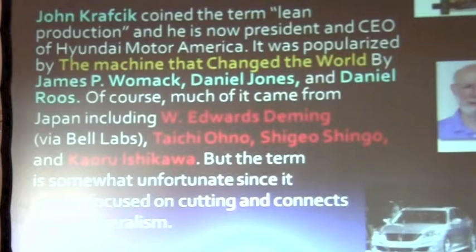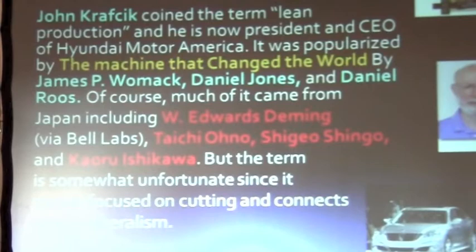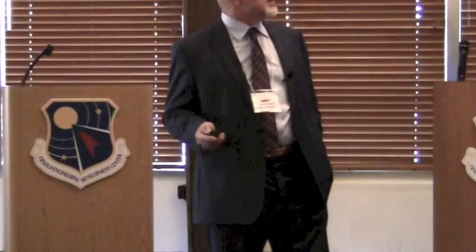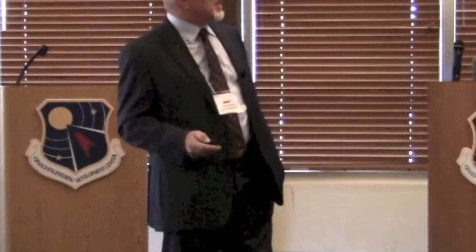The term lean production was coined by John Krafcik, who's now head of Hyundai North America, and popularized by Womack. It obviously started through a combination of Americans in the Bell Labs tradition — Deming and others — and a number of Japanese professors and Toyota workers, especially Ohno and Ishikawa. Toyota is primarily the example of this model, and implementing those four basic aspects of lean production, I think, basically benefits production in the United States and other places.